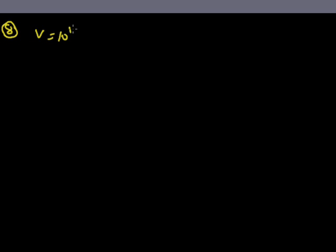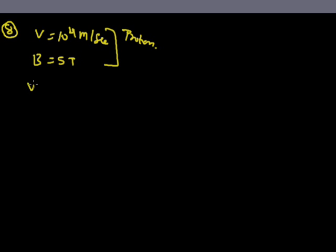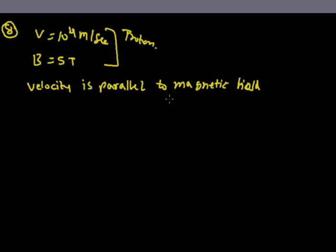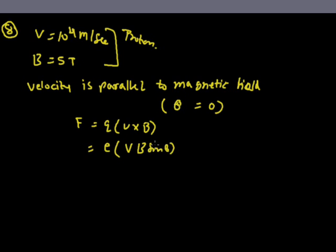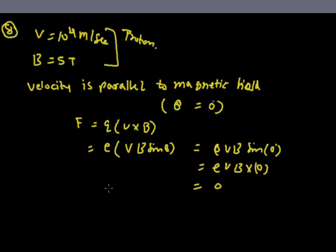A proton is moving with velocity V = 10⁴ m/s in a magnetic field of B = 5 Tesla. It is given that the velocity is parallel to the magnetic field, meaning the angle θ between V and B is 0°. So F = qVB sinθ = eVB sin0° = eVB × 0 = 0. The net force on the proton is zero.